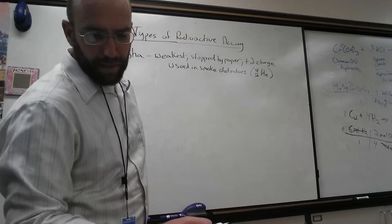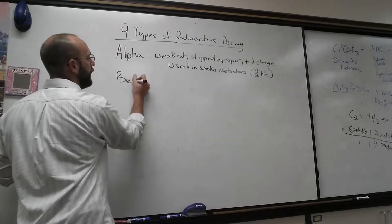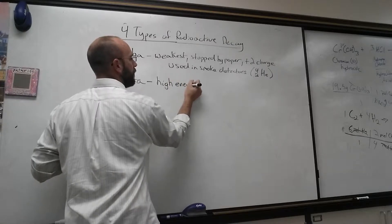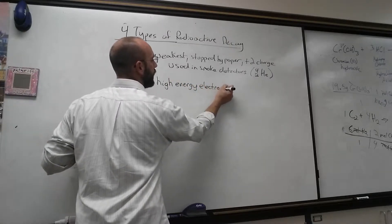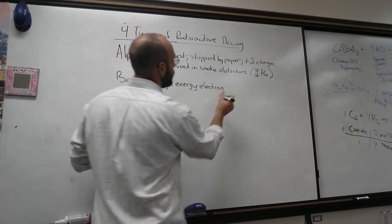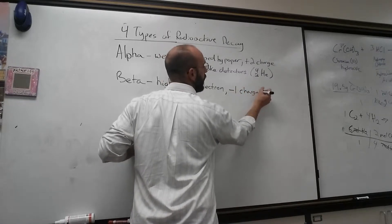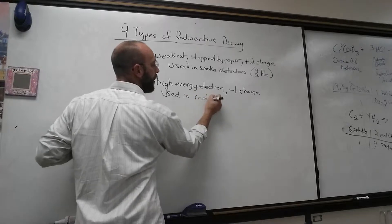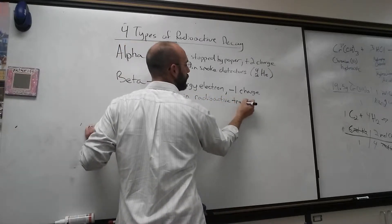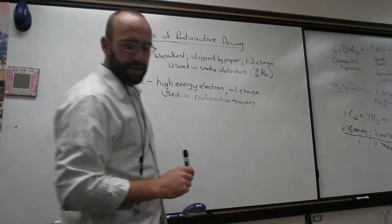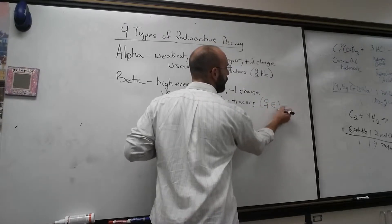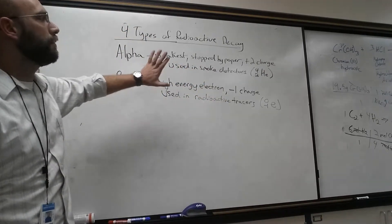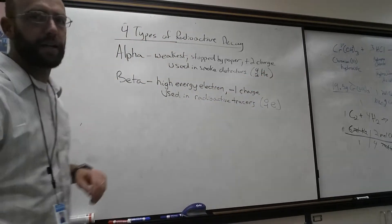The second type is beta decay. Beta is a high-energy electron being released. It has a minus one charge, also ionizes, and it's used in radioactive tracers. For this, we use the symbol 0, negative 1, E. We will do computations with both alpha and beta today on your next test.